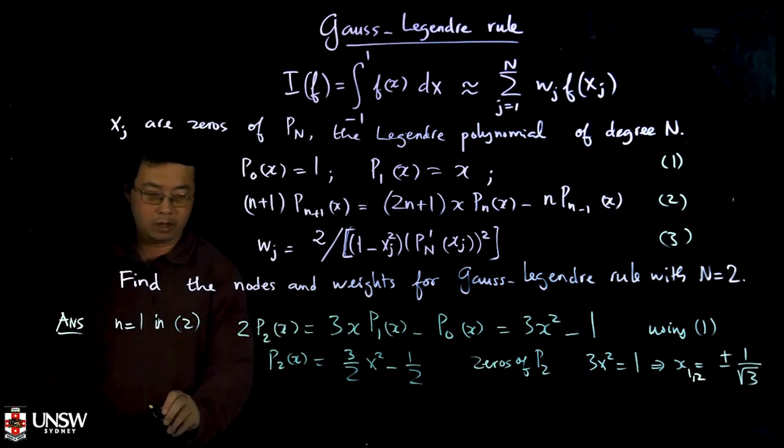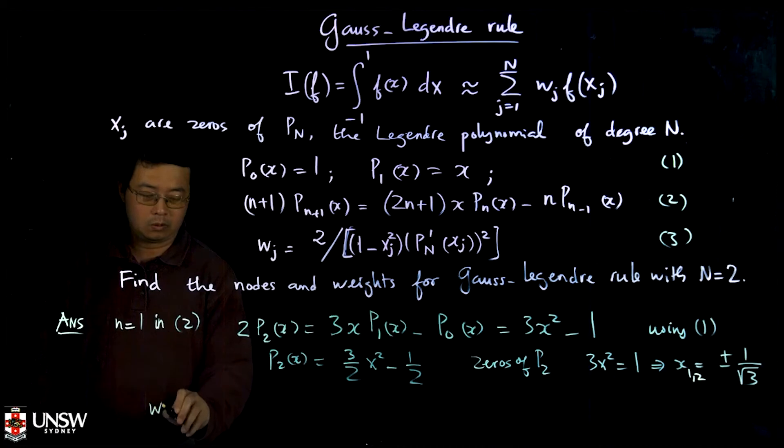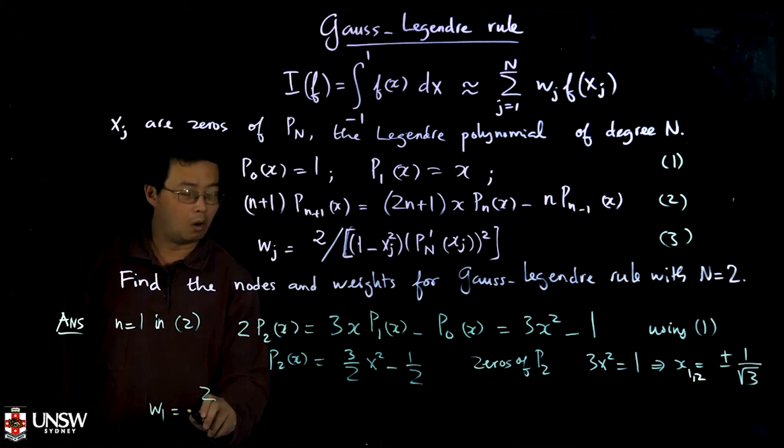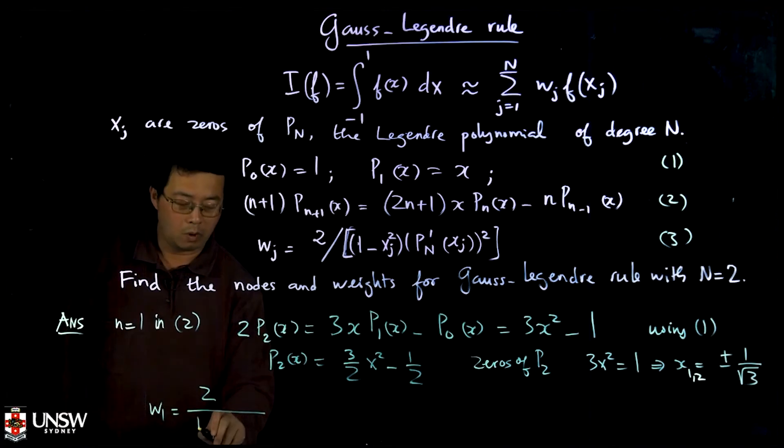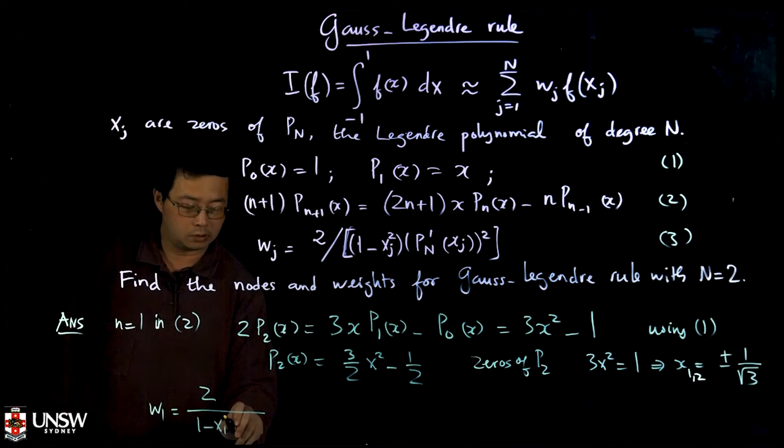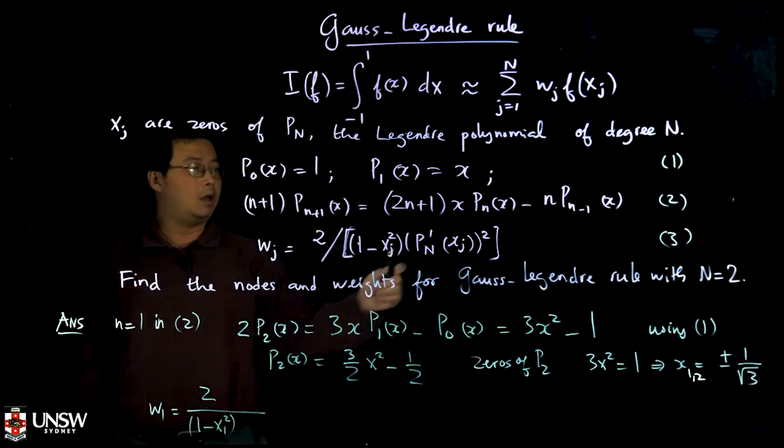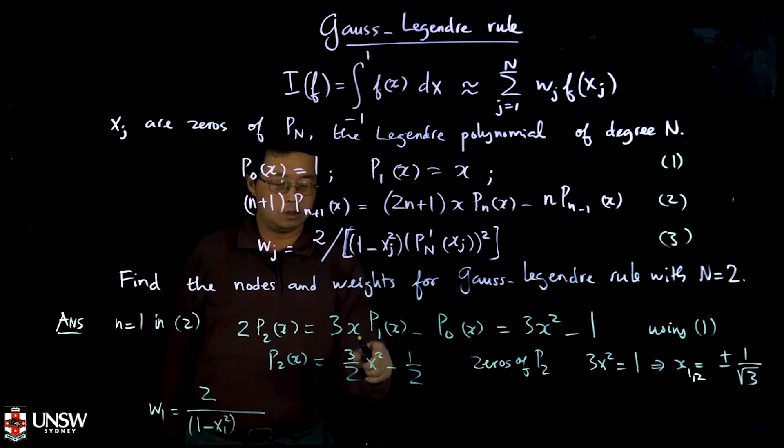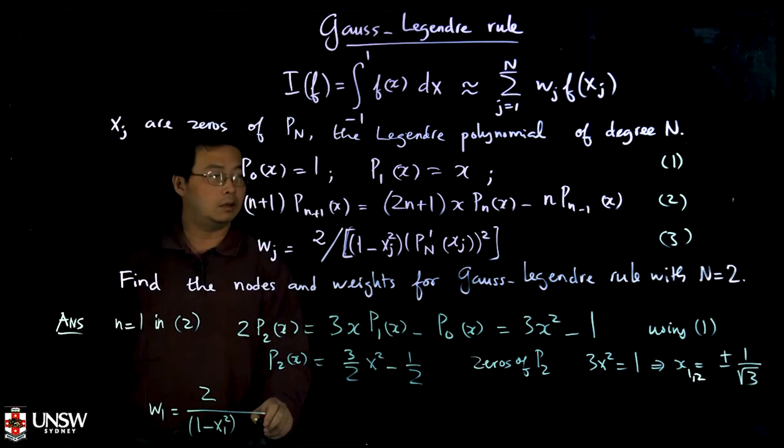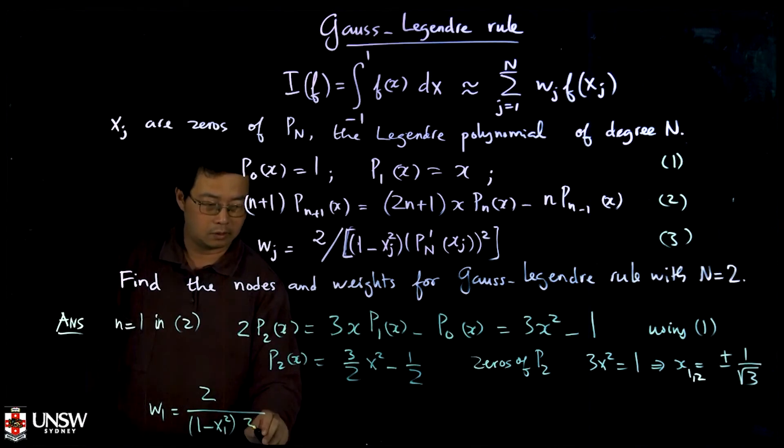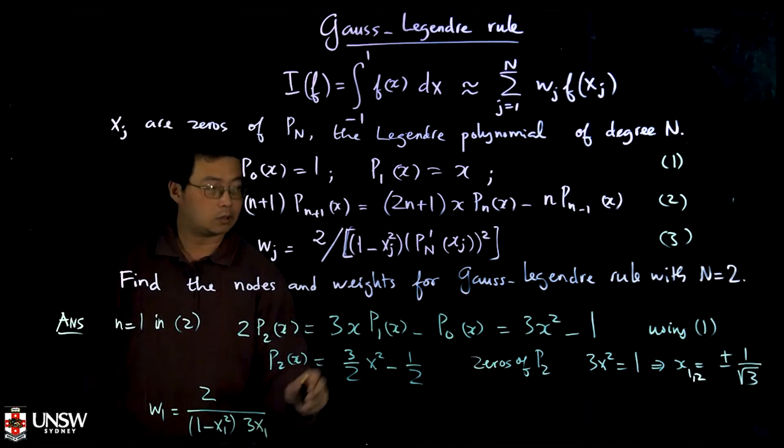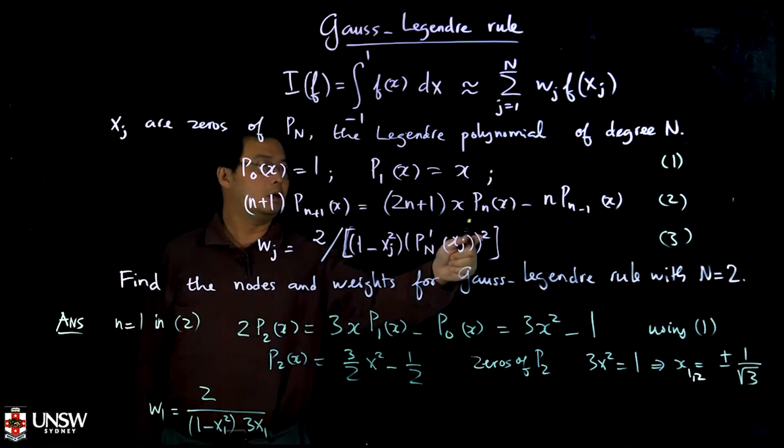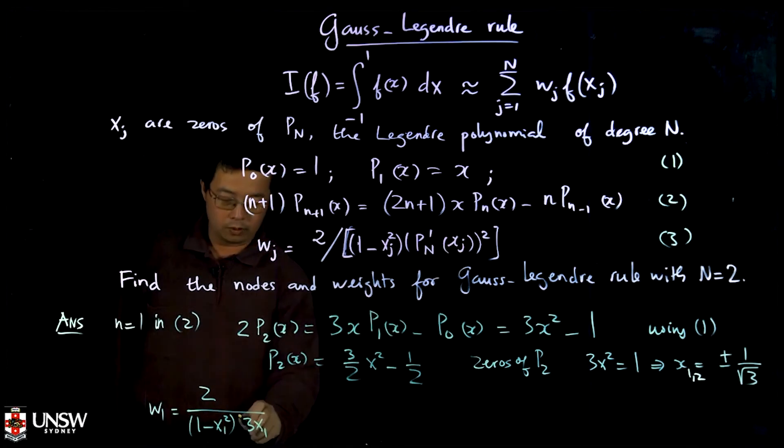The weight w₁ will be 2 over 1 minus x₁ square. Now this one is a derivative, so derivative of this function is 3x. So 3x₁, because you put in 3x₁, and then you square the whole thing.